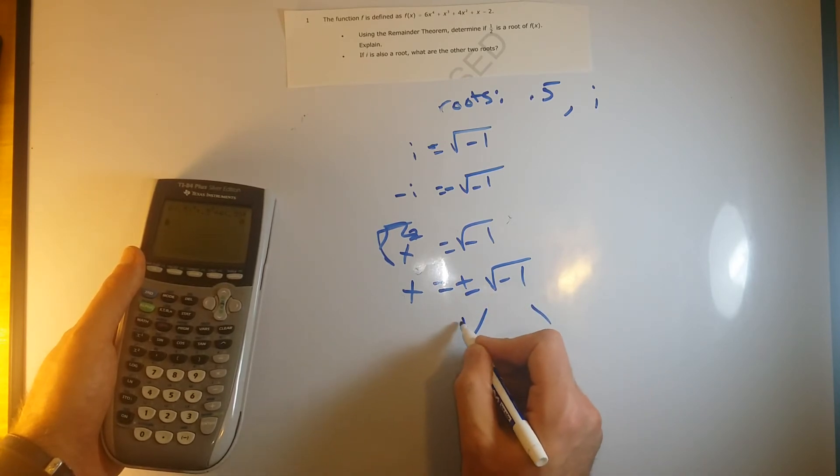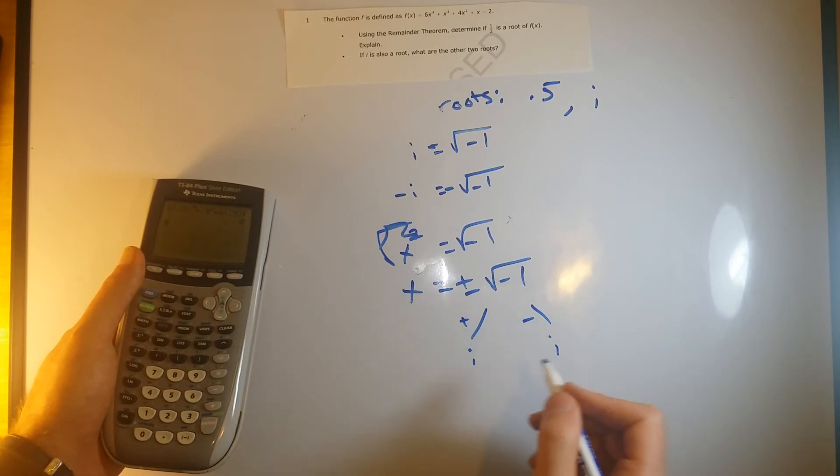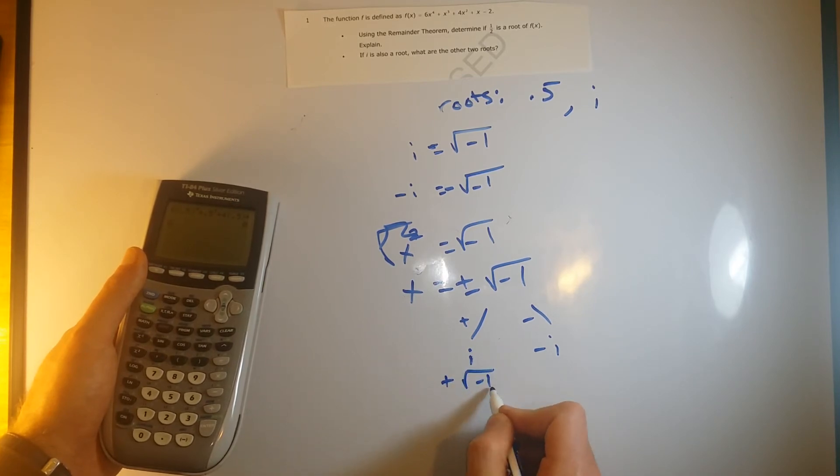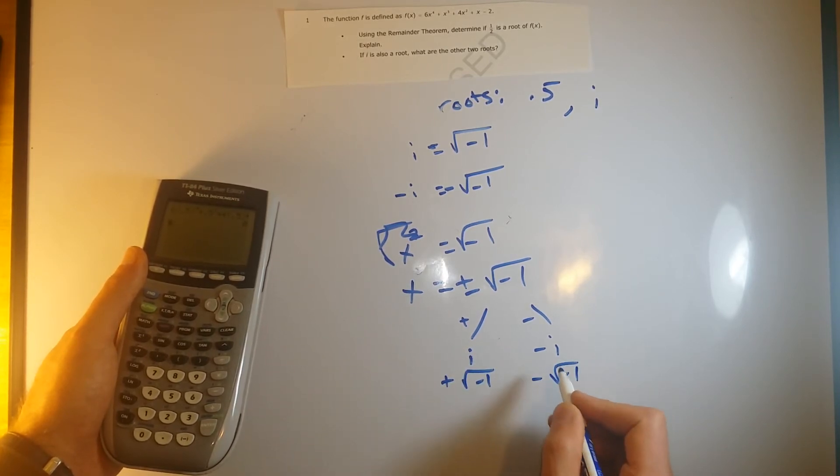So that's why we get two roots, so the square root of negative 1 is just i, and this would be a plus, this would be a minus, so we get a plus i or a minus i. This could also be written as plus the square root of negative 1 or minus the square root of negative 1.